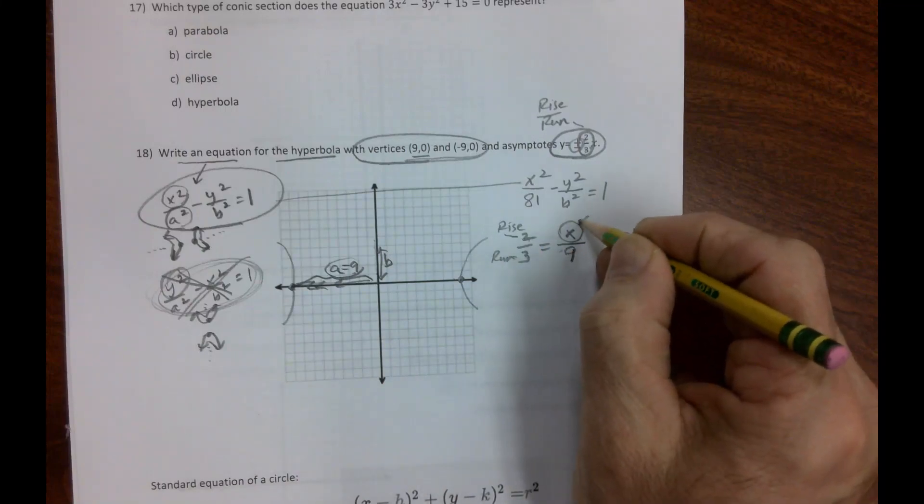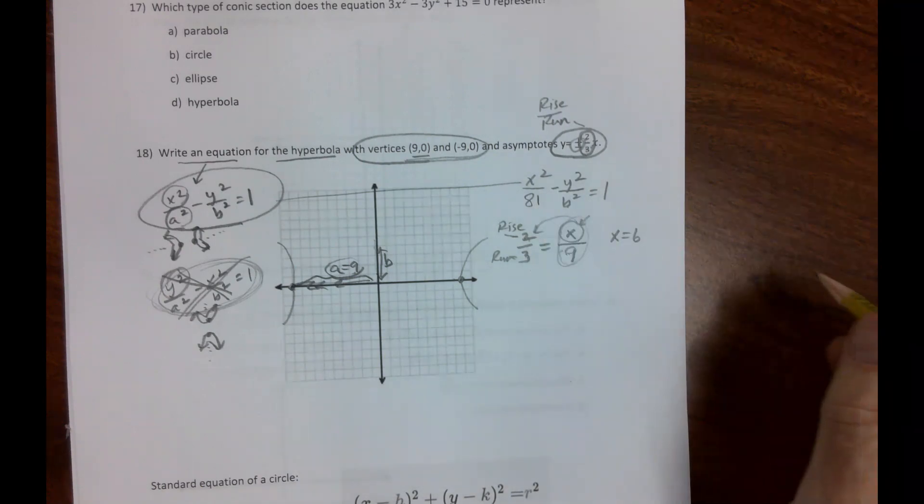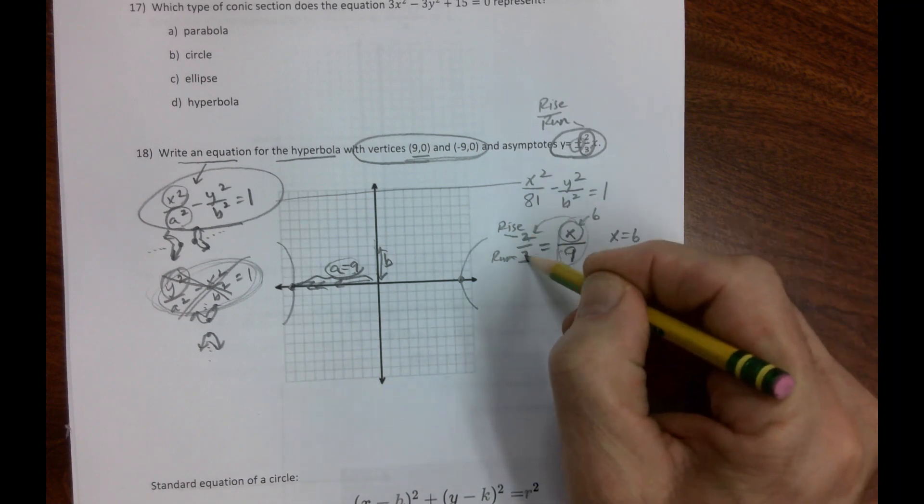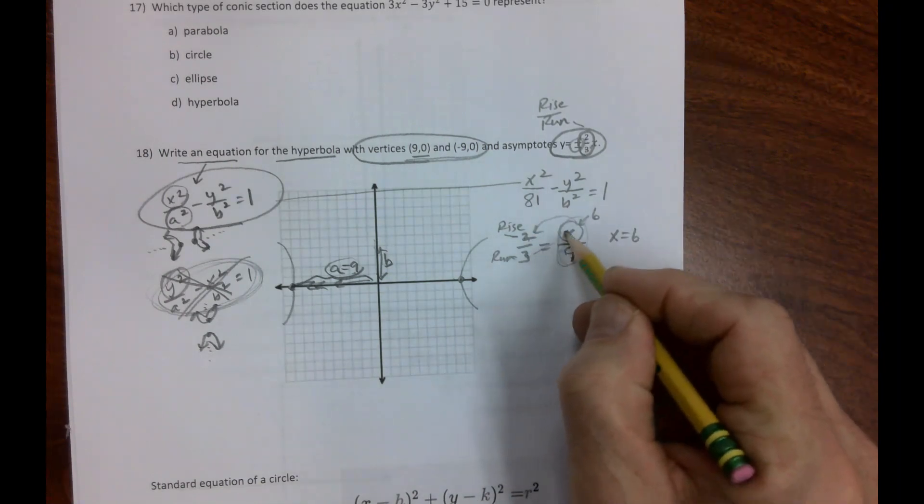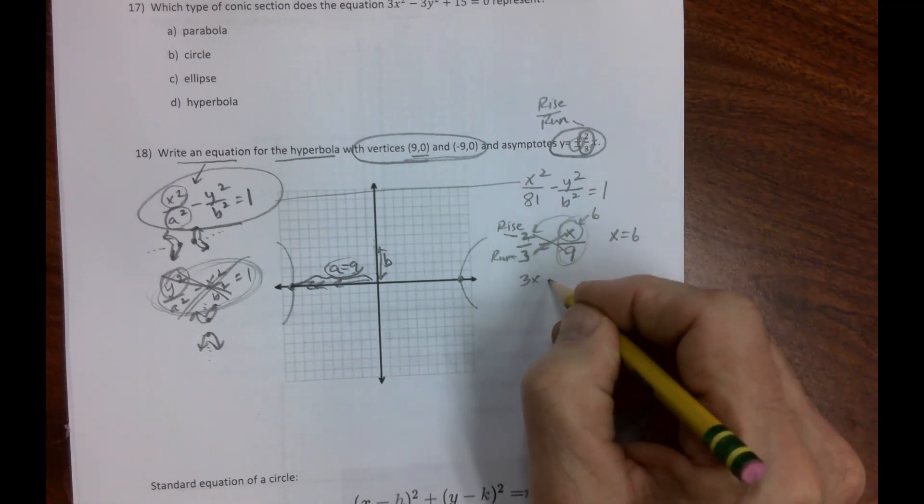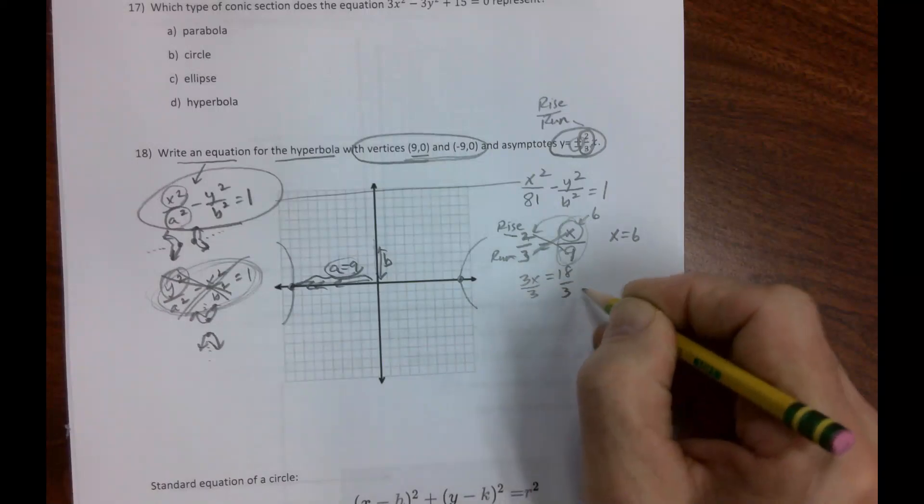We know it's 6, but that's one way. Another way: what could I put here so this fraction would reduce to 2/3? That would have to be 6 because 6/9 reduces to 2/3. But the old standby is cross multiply: 3x equals 2 times 9.